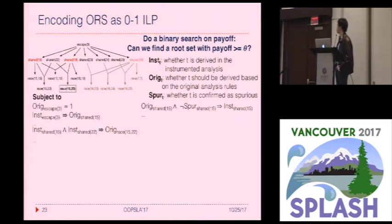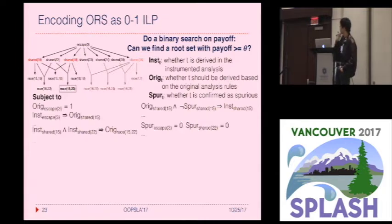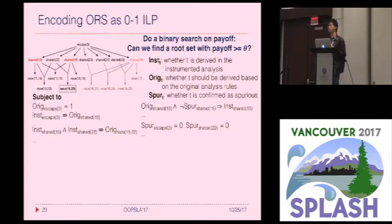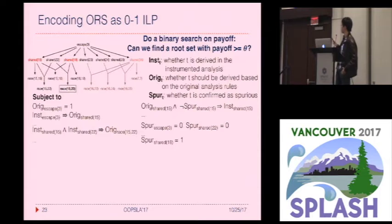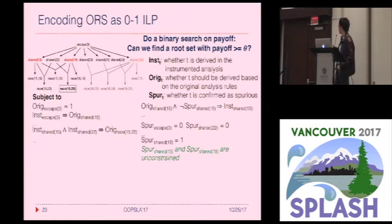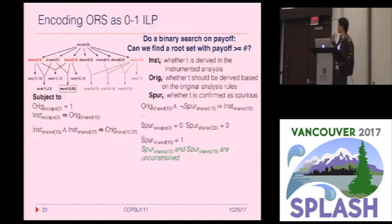Then we encode the tuples marked as spurious by the user. We assign the SPOR variable to zero for tuples not targeted by the heuristic, since they'll never be asked as questions. At this point, the user has confirmed shared(16) as spurious, so we assign one to its corresponding SPOR variable. We leave SPOR(15) and SPOR(18) unconstrained, and we generate the final rule set from the assignments to these two variables.